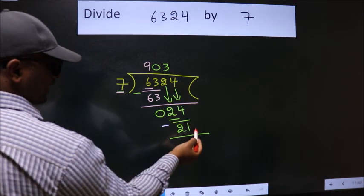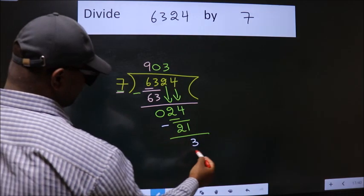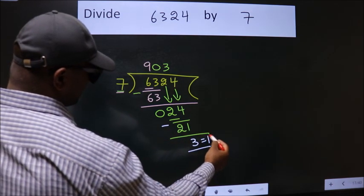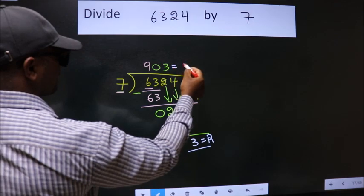No more numbers to bring it down, so we stop here. This is our remainder. This is our quotient.